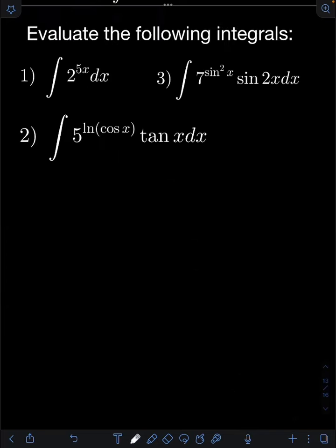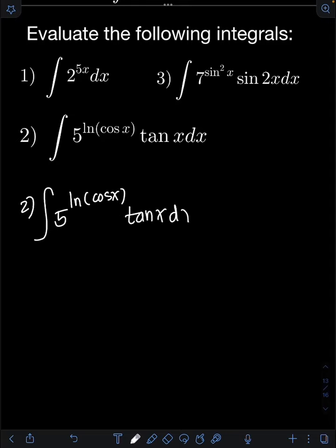For number 2, we have the integral of 5 raised to ln of cosine x times tangent x dx. We'll use u-substitution, letting u equal the exponent of the base 5, which is ln of cosine x.